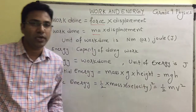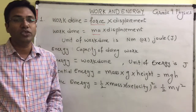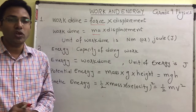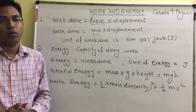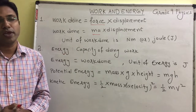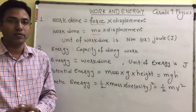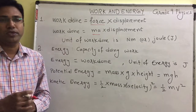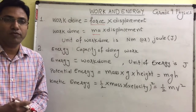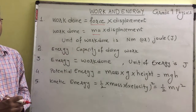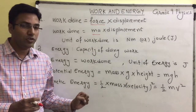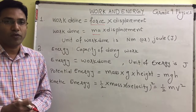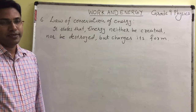The potential energy formula is mass into g into height, or in short mgh, where m is the mass of the object, g is acceleration due to gravity, and h is the height reached by that object. The value of g you have to take as 9.8 meters per second squared, or sometimes 10 as it will be mentioned in the question. For kinetic energy — any object which is in motion possesses kinetic energy. Therefore the kinetic energy formula is half into mass into velocity squared, written as KE = ½mv².